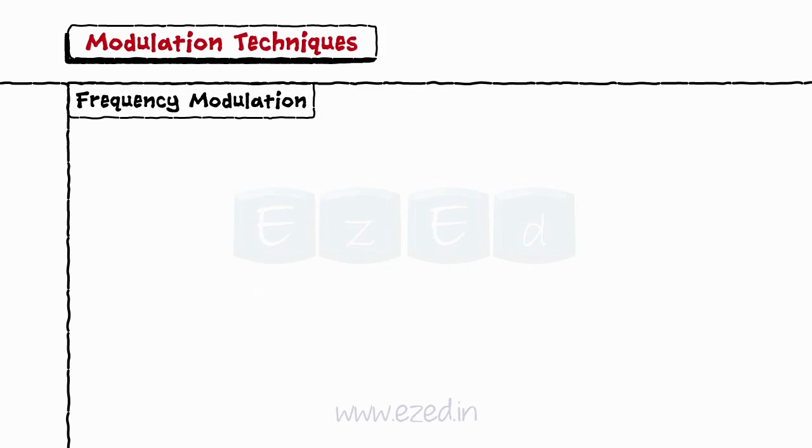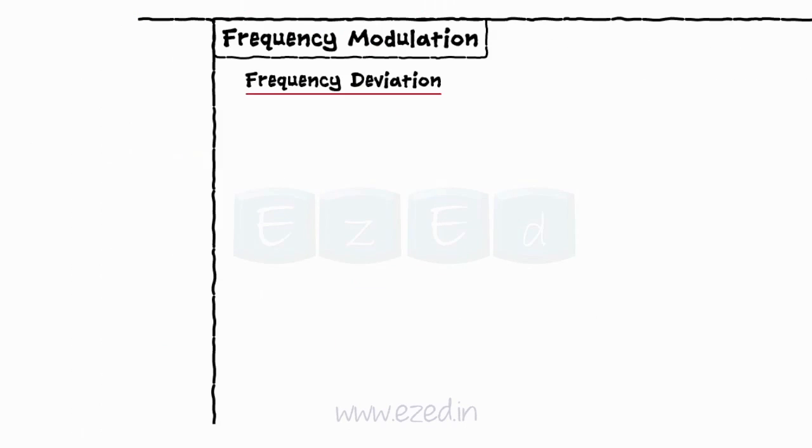Now, let's see the concept of frequency deviation. The amount by which the carrier frequency varies from its unmodulated value is called as deviation represented as delta. The deviation is proportional to the instantaneous voltage of the modulating signal.